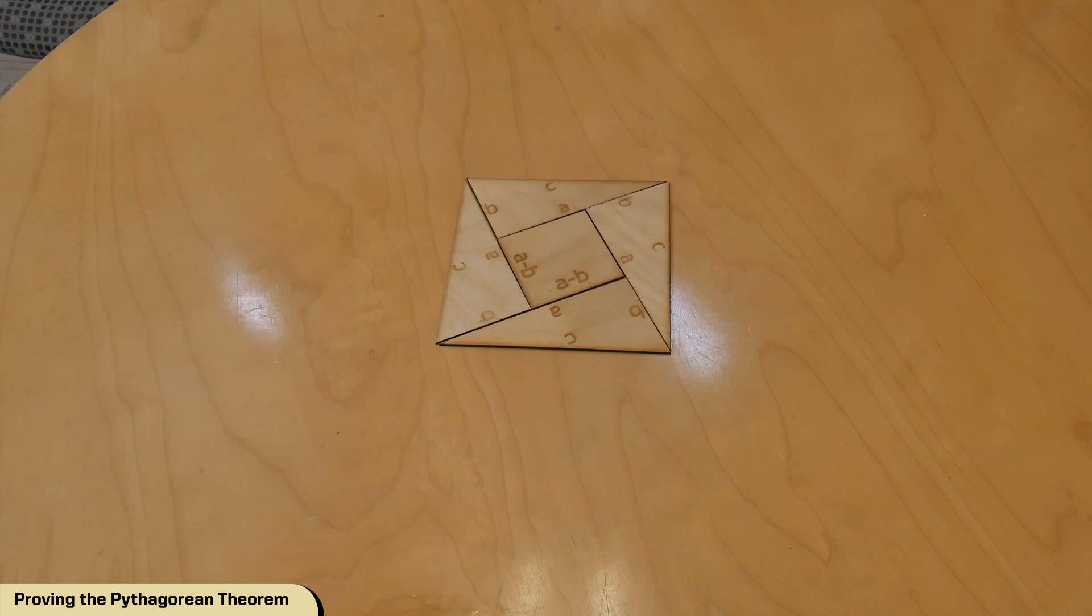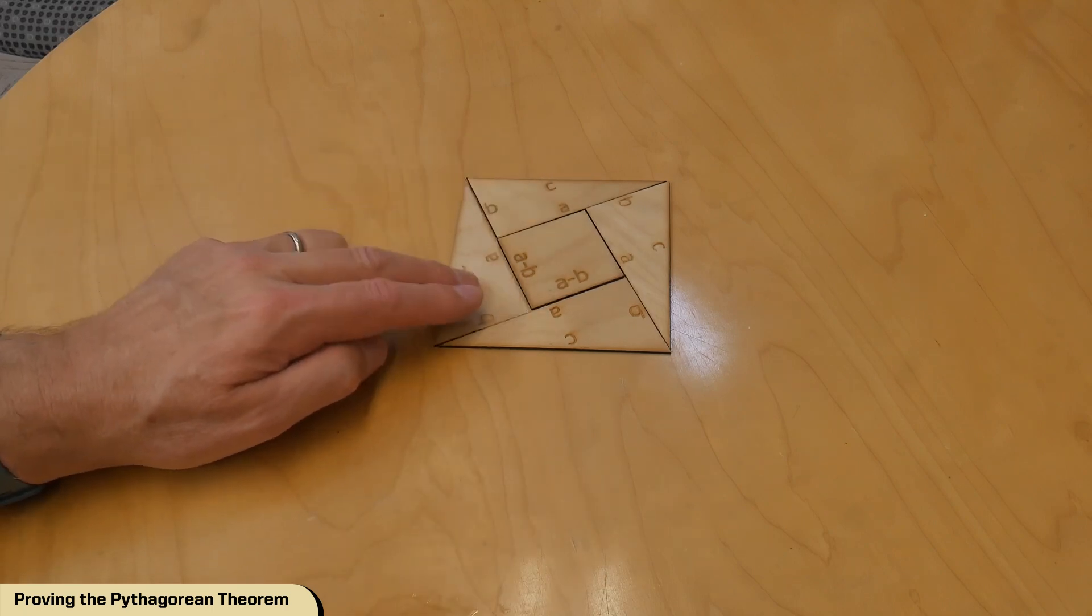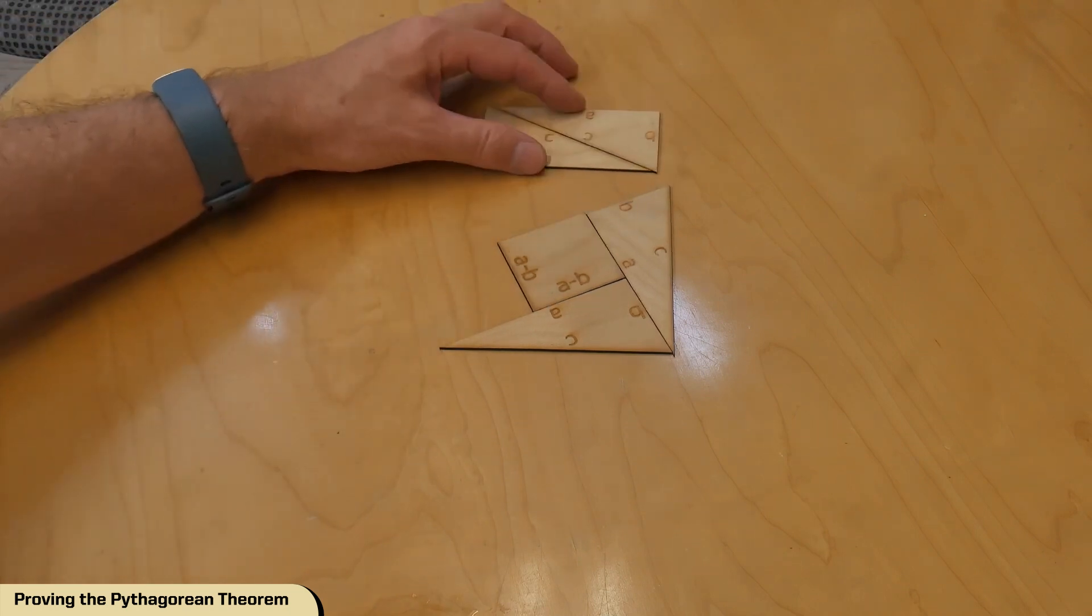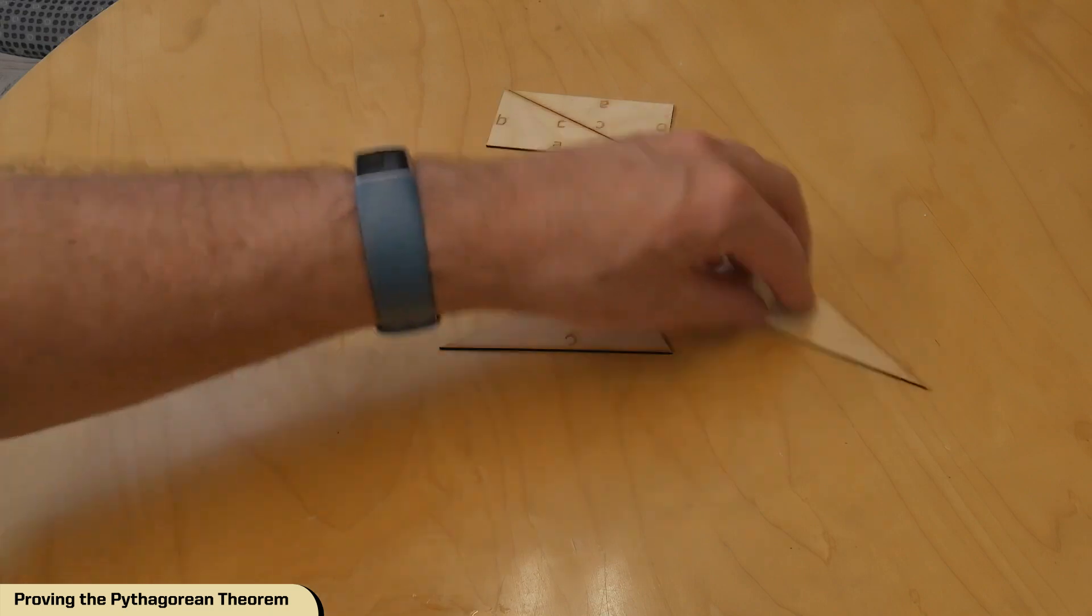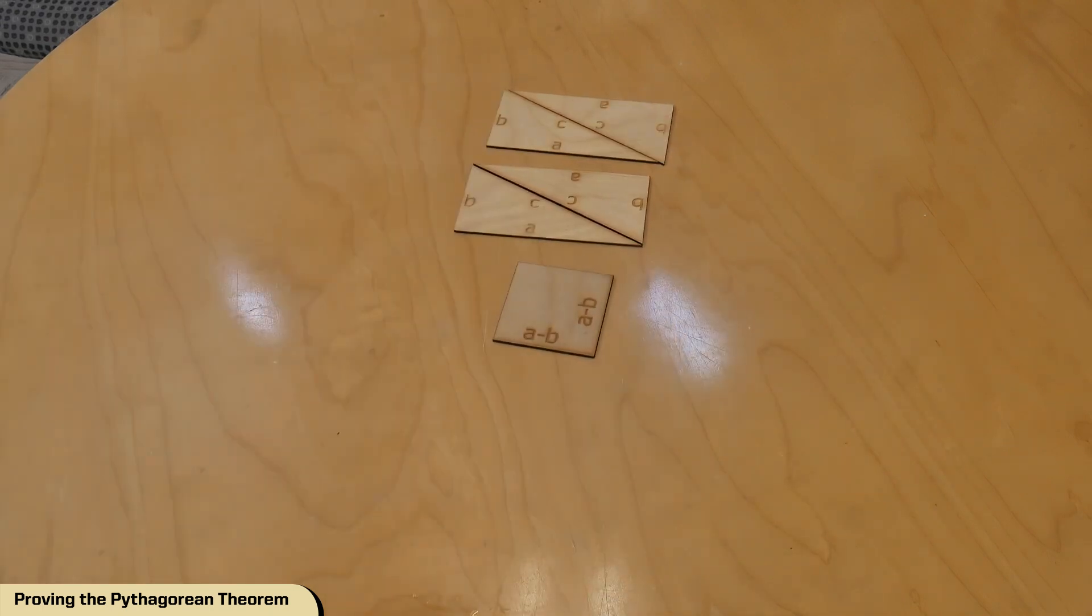So let's look at some areas. The area of the big square is c times c. Well, let's see, what were all these? I can actually do that. That rectangle has an area of ab. That's ab. And that's (a minus b) squared.